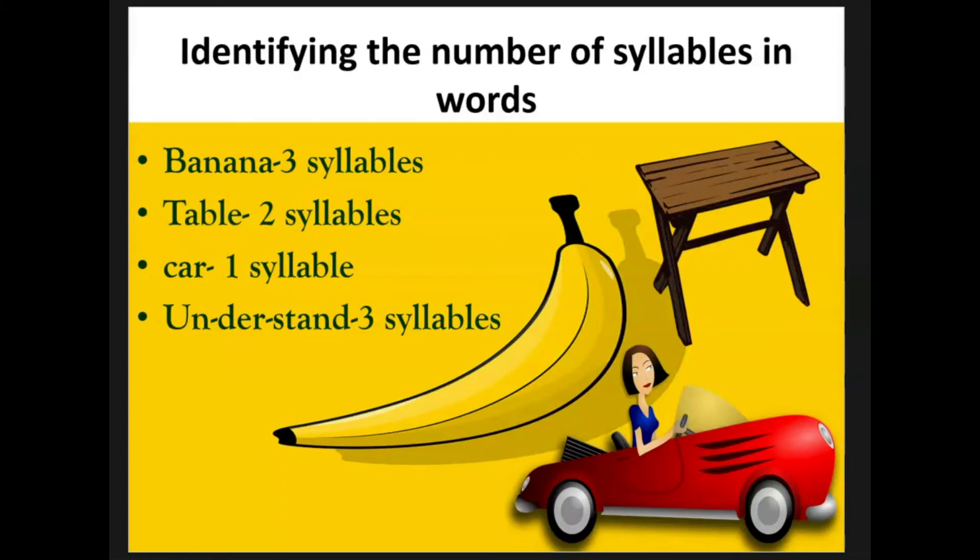It is important to note that each syllable must contain a vowel, as you will have observed in the word understand. This word has three syllables. Understand. One, two, three. Each containing a vowel. If we look carefully at each syllable, we would see at least one vowel in each syllable. In the first syllable, we see the vowel U. In the second syllable, we see the vowel E. And in the third syllable, we see the vowel A.